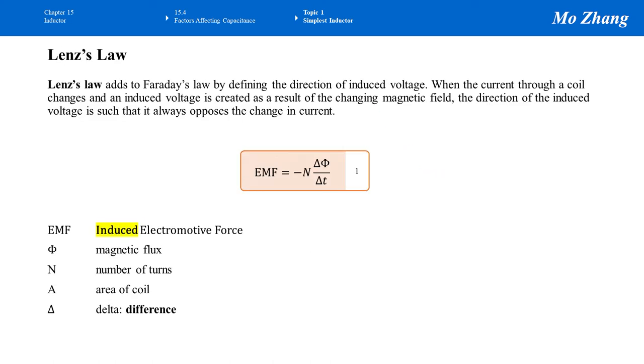Now let's also review the Lenz law. The Lenz law is one step further of the Faraday's law. The Lenz law is just a refinement of the Faraday's law by including the direction of the induced voltage. When the current goes through a coil and it changes, the induced voltage is created. This is created as a result of changing the magnetic field in the circuit. The direction of the induced voltage is always opposite to the change in the current. The formula here is EMF, which stands for the induced electromotive force, or the induced voltage, equals to negative. The negative sign here means the directions are opposite to each other.